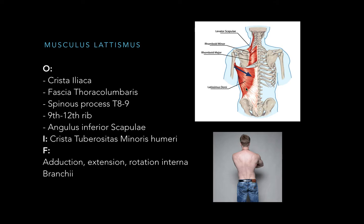The next muscle is musculus latissimus dorsi. It can have different origin points: crista iliaca, the fascia thoracolumbaris, the spinous process of T8 and T9, and it also touches the angulus inferior of the scapula. It inserts at the minor tubercle crest of the humerus. When this muscle contracts, it pulls the arm towards the midline, rotates the arm internally, and also pulls the arm backwards. On the daily use, this muscle is called lats.